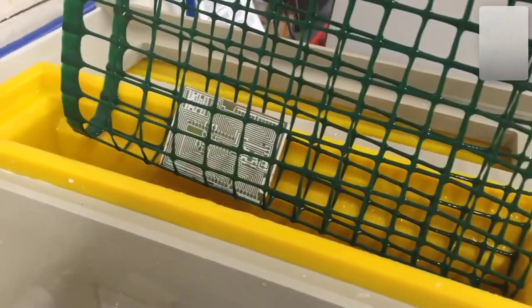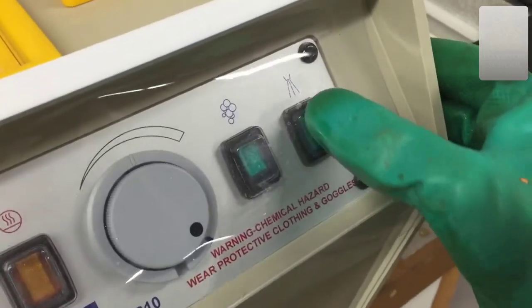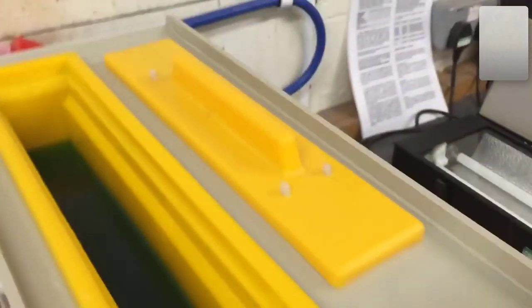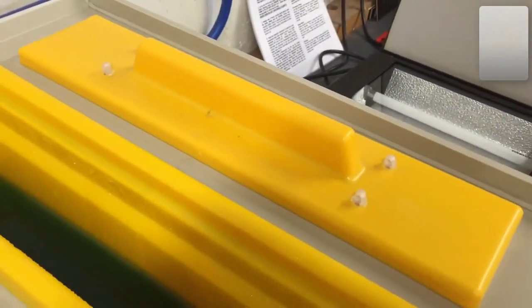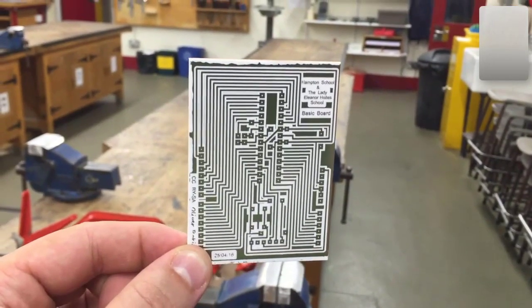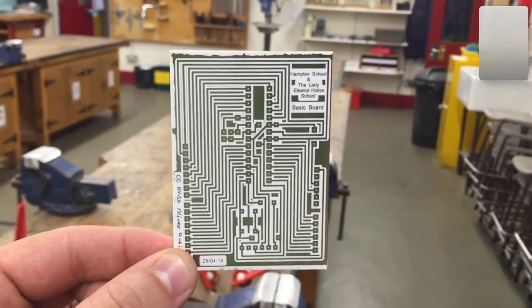Once you're totally happy with it, turn the bubbles off and put it into the water tank. At this point you can spray water onto your design until you've cleaned off all of the acid. And there you have it, you've etched yourself a PCB.